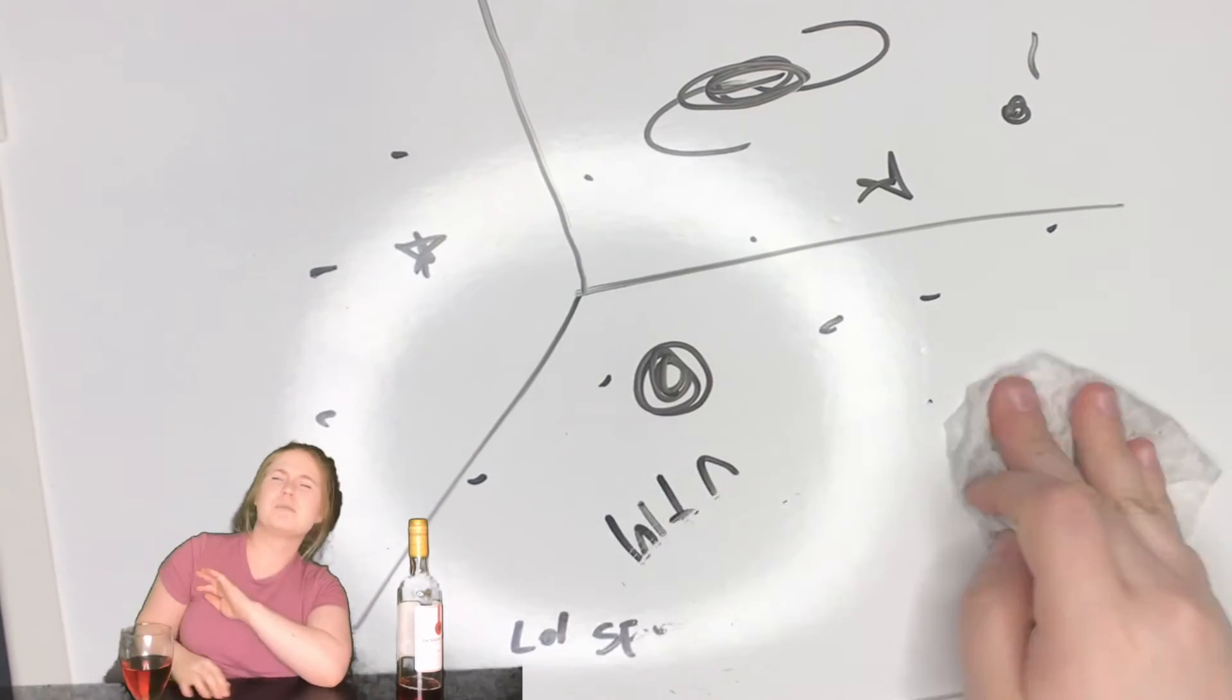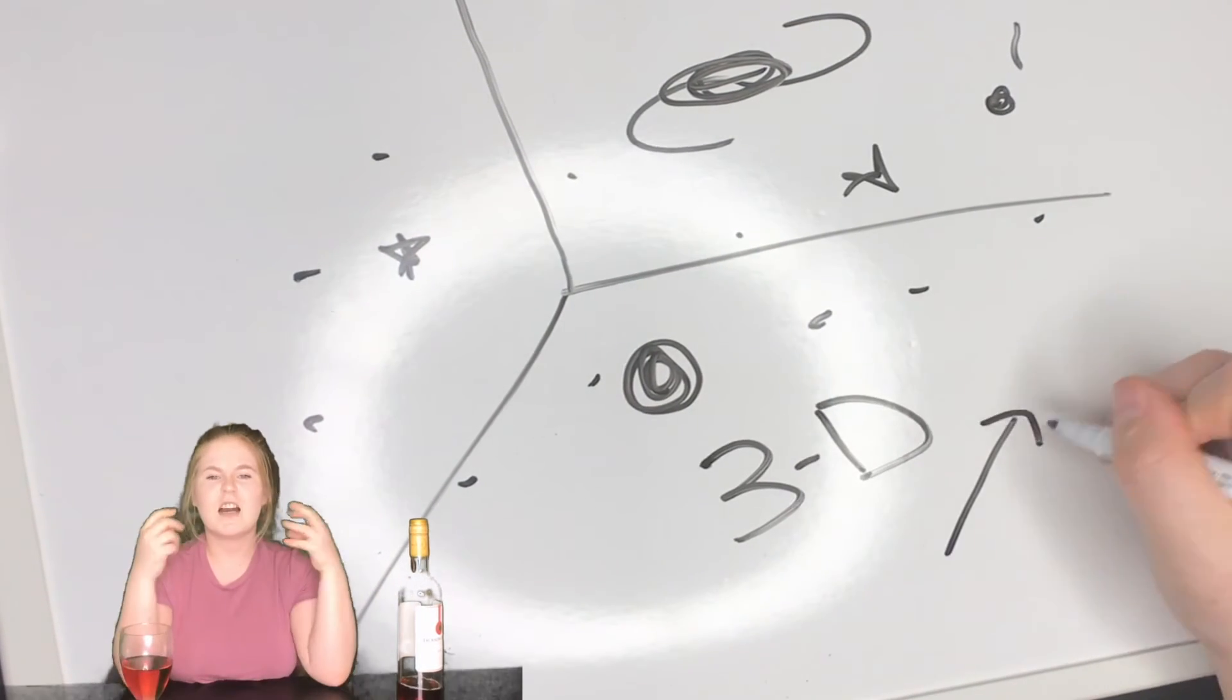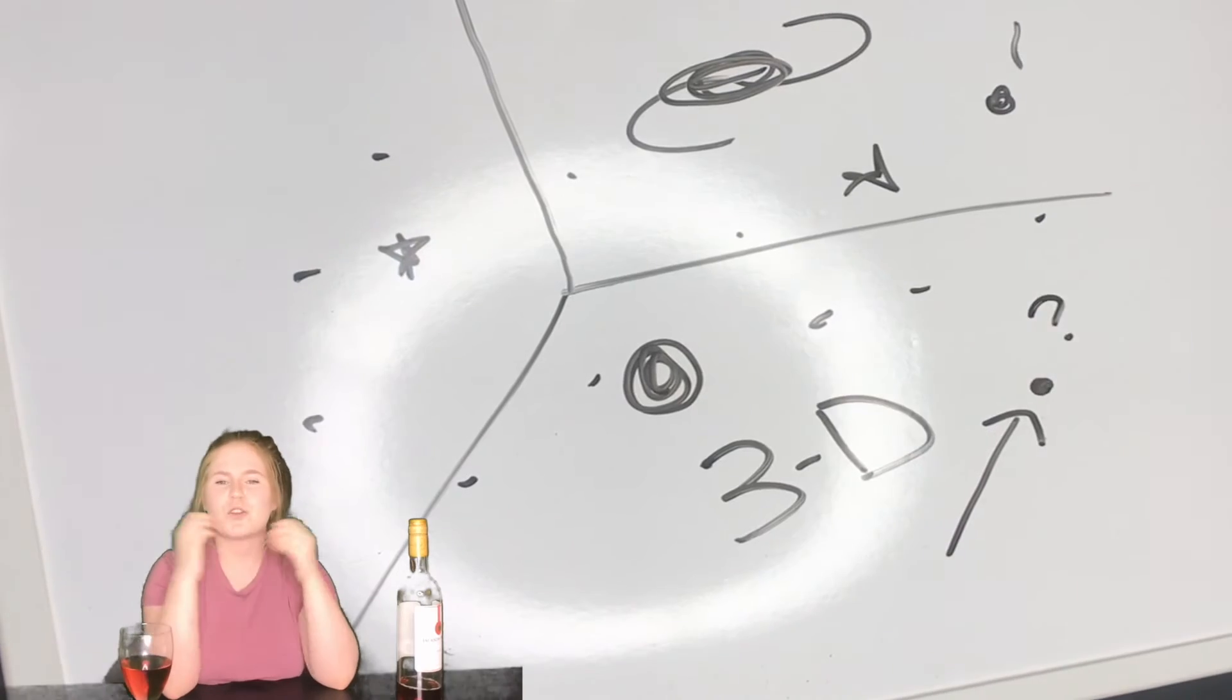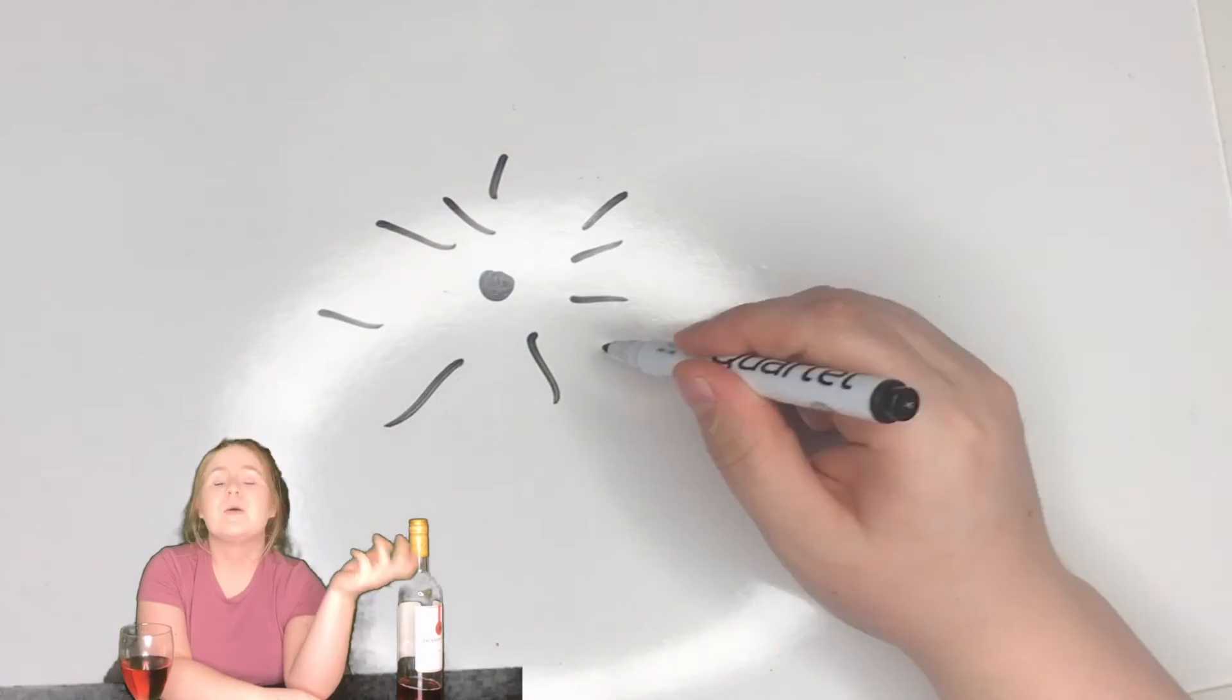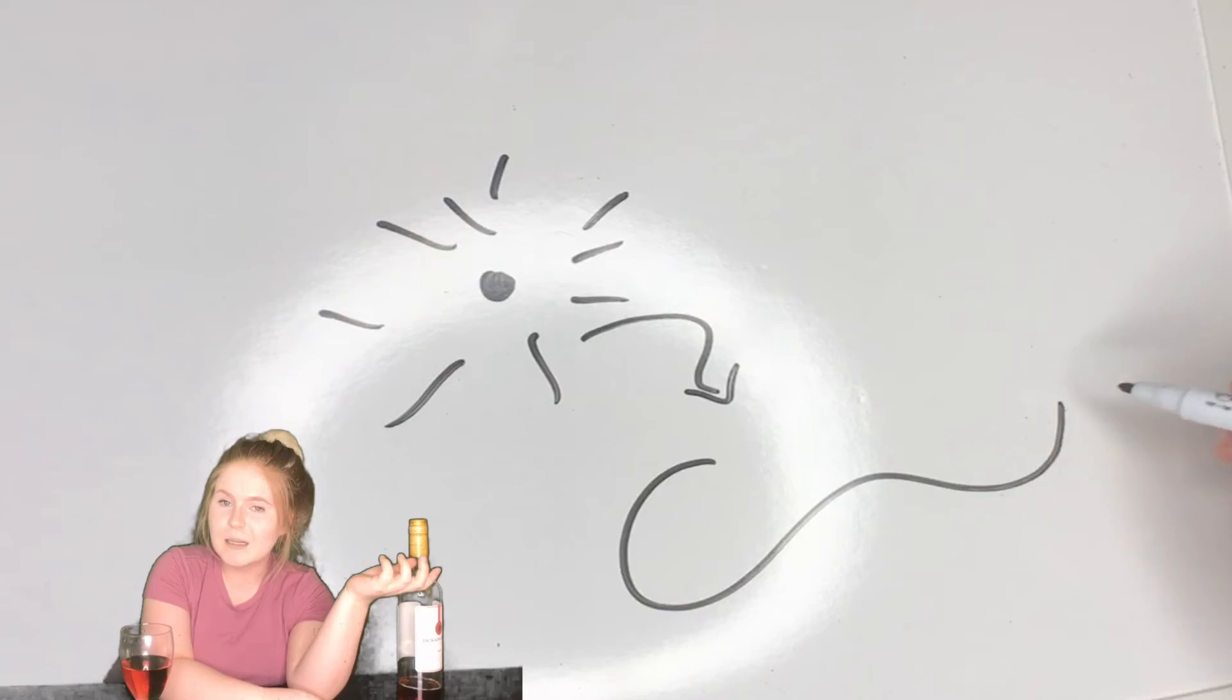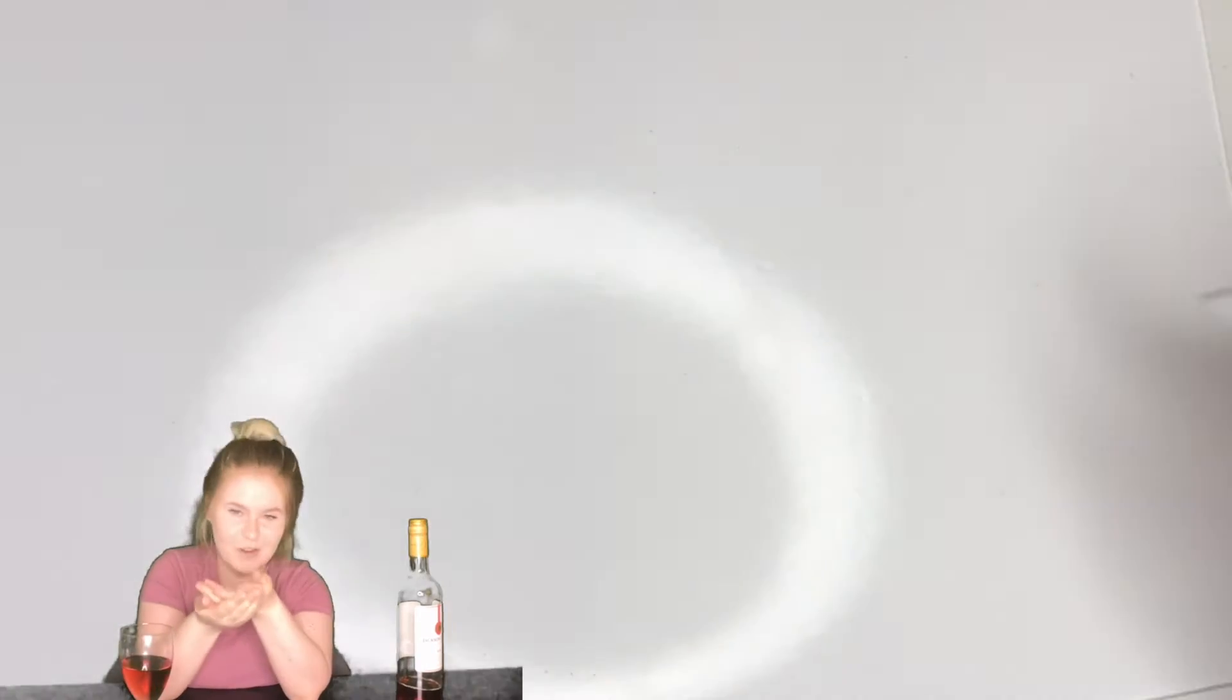Space-time is a weird way of putting it. Think of like a three-dimensional us. They're a point. So they're not a probability of being there. They're for sure there. And what's more complex than a point? A line, aka a string.